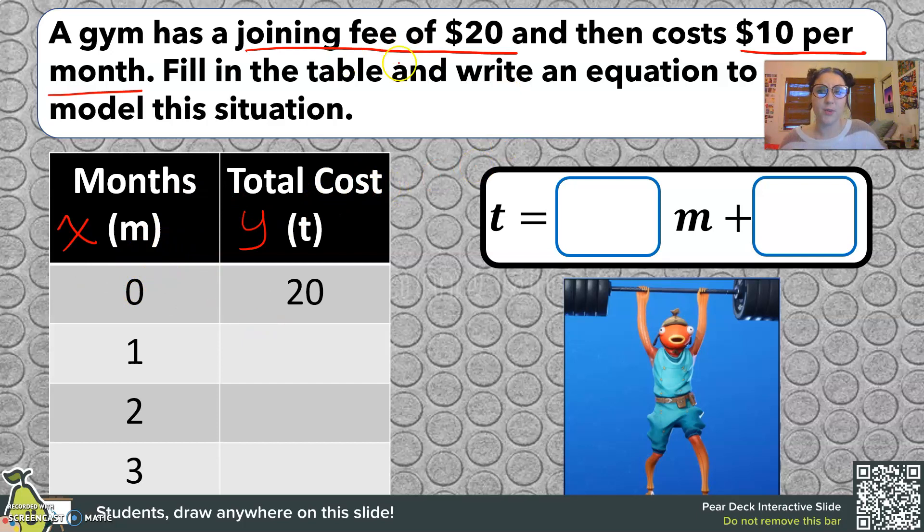So we have a joining fee of $20. So before we even start going to the gym, we have to pay that joining fee first. So that's $20. That's at zero months. Then each month after that is $10. So we want to find out what is our total cost that we spent at the gym going through each month.